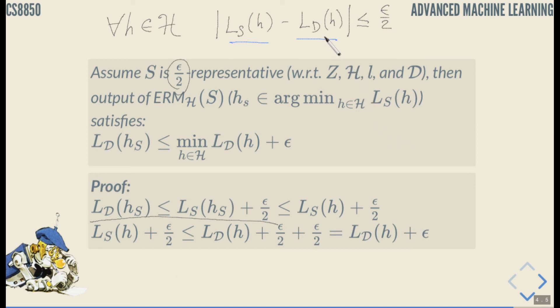So let's say if true loss is less than the sample loss then trivially LD over H is less than or equal to plus epsilon over 2. If LD is larger than LS but their difference is smaller than epsilon over 2, then clearly this inequality still holds because of this inequality.